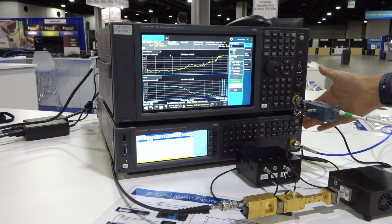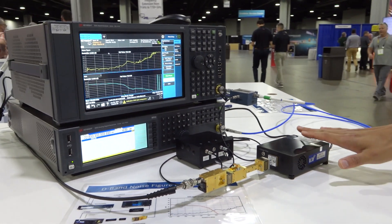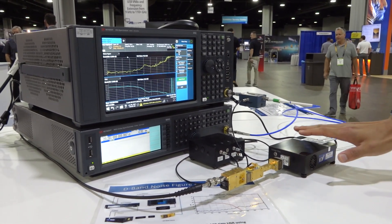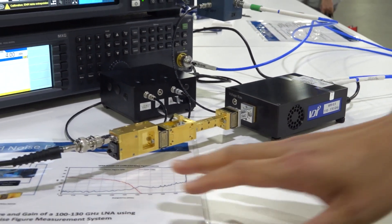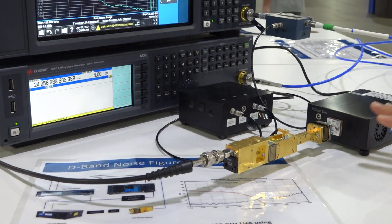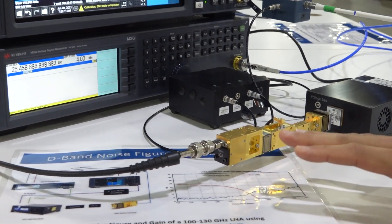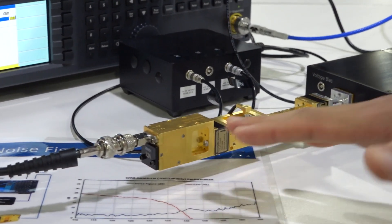The external signal generator drives the local oscillator of our VDI down converter, called a VDI SAX spectrum analyzer extender. We are also using a noise source for this measurement. To run this measurement, we connect the noise source directly to the spectrum analyzer extender.